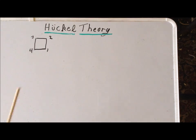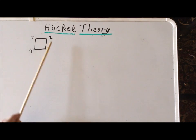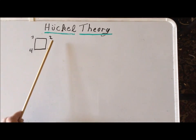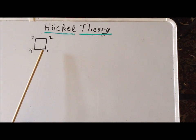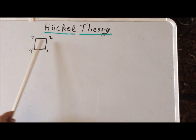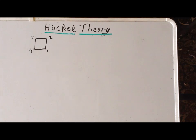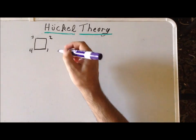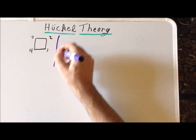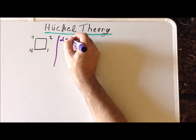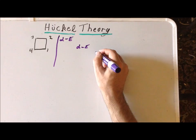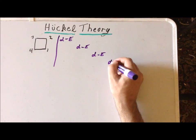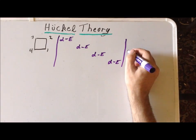So we'll notice one thing to remind ourselves: in this particular cyclic system, 1 is bound to 2, 2 is bound to 3, 3 is bound to 4, and 4 is bound to 1, but 1 and 3 are not bound and 2 and 4 are not connected. So therefore, using the rules of Hückel theory, we can write down a secular determinant where we have alpha minus the energy along the diagonal. We can write that down immediately and we're going to have a 4 by 4 determinant, which we set equal to 0.